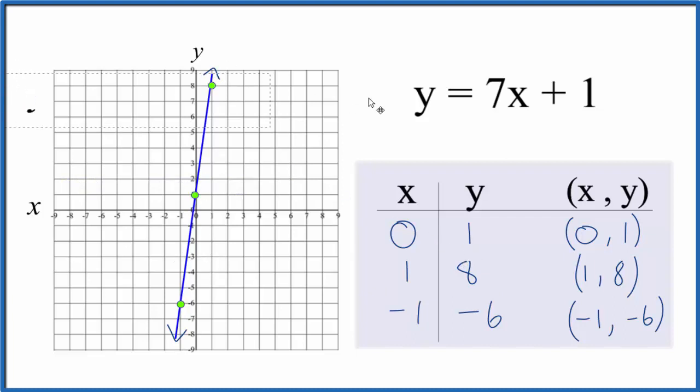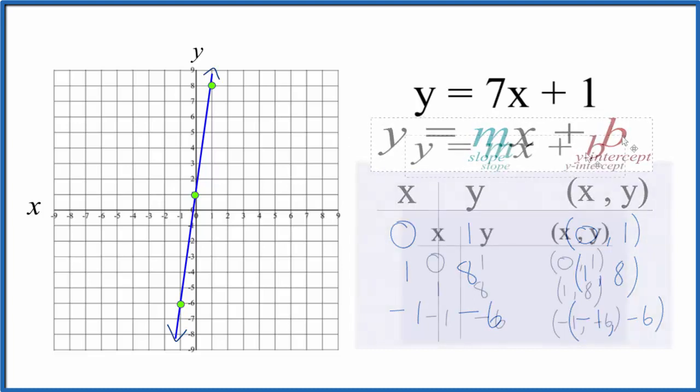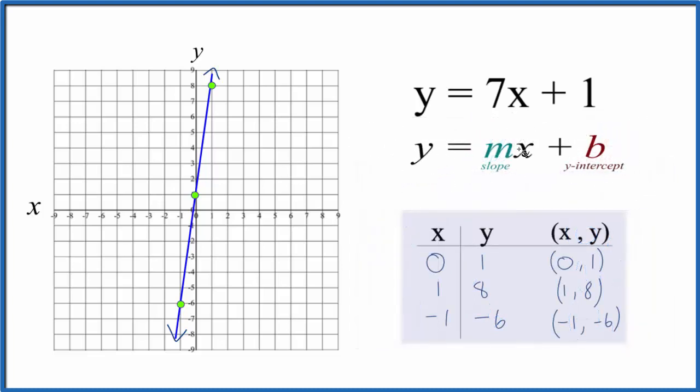Let's check our work with slope-intercept formula. So we have y equals mx plus b. b, the y-intercept, that's 1. So that's where our line will cross the y-axis. Let's just put that right here. 1 on the y-axis. That makes sense.